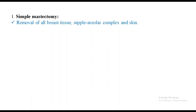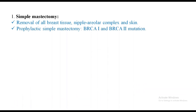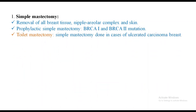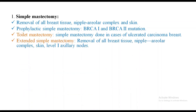Simple mastectomy is removal of all breast tissue, nipple-areola complex, and the skin. Prophylactic simple mastectomy can be done in BRCA1 and BRCA2 mutations. Toilet mastectomy is essentially simple mastectomy done in cases of ulcerated carcinoma breast. In extended simple mastectomy, removal of all breast tissue, nipple-areola complex, skin, plus level 1 lymph nodes is done.